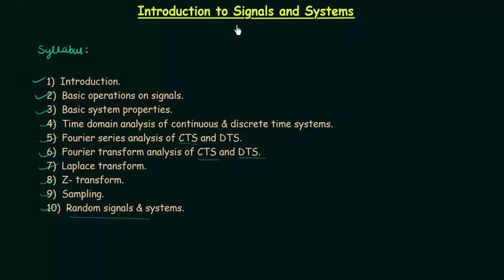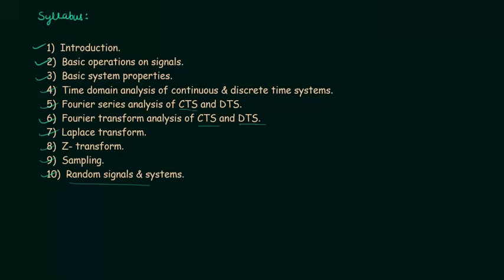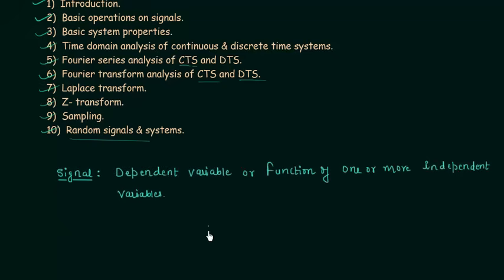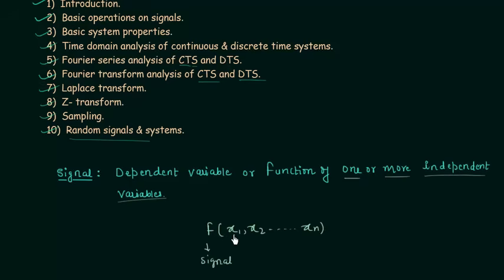In this lecture we will start with the definition of a signal. A signal is a dependent variable, or we can say a function of one or more independent variables. So signal is a function which depends on one or more independent variables — let's say x1, x2, all the way to xn. So function f is a signal which depends on x1 to xn.